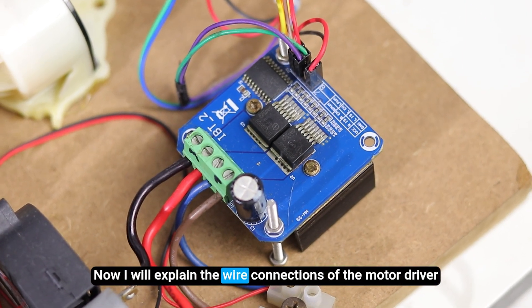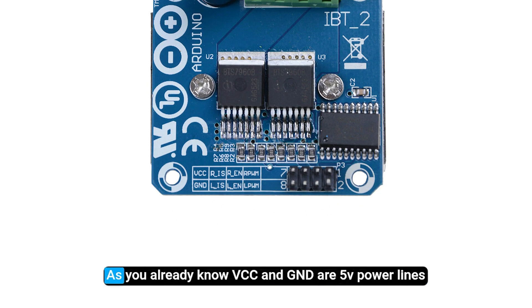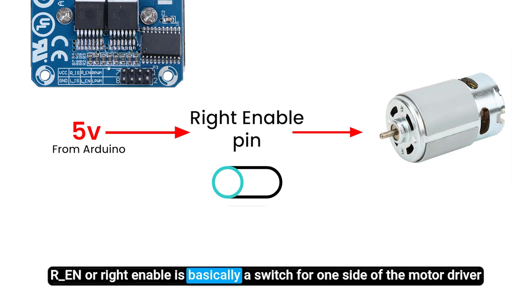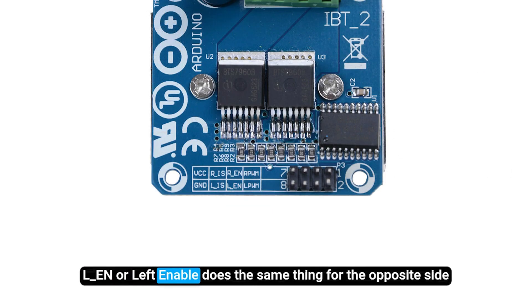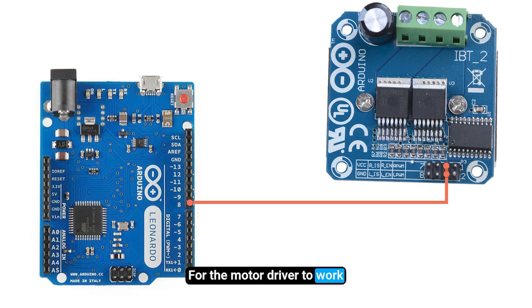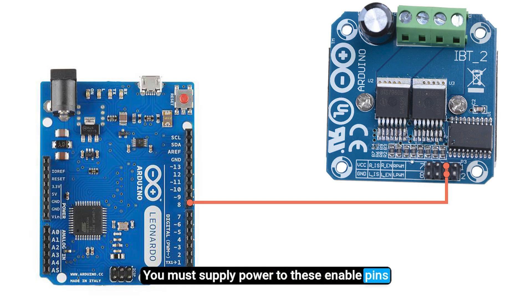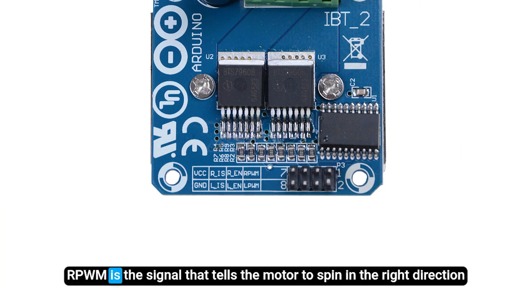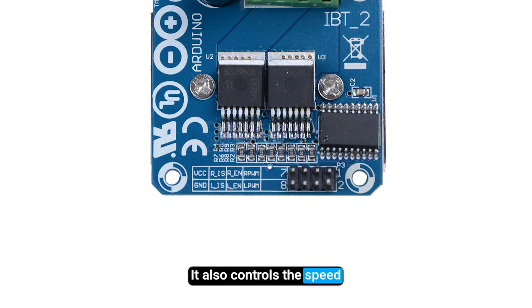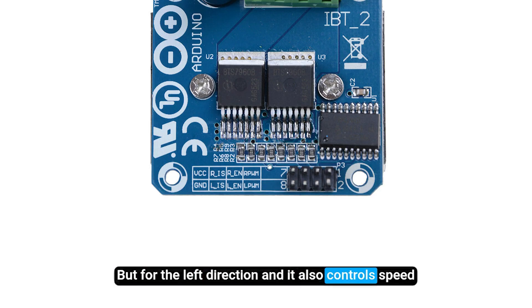Now I will explain the wire connections of the motor driver. As you already know, VCC and GND are 5V power lines. REN, or right enable, is basically a switch for one side of the motor driver. LEN, or left enable, does the same thing for the opposite side. For the motor driver to work, you must supply power to these enable pins. RPWM is the signal that tells the motor to spin in the right direction. It also controls the speed. LPWM does the same thing but for the left direction, and it also controls speed.